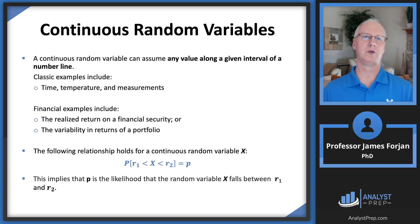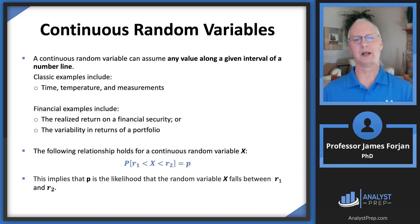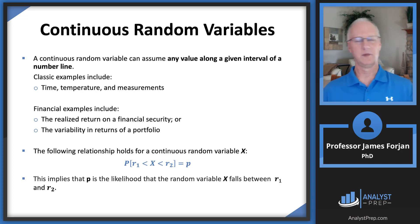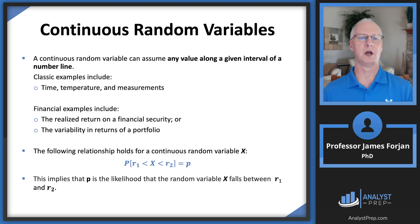A continuous random variable can take any value along an interval. Classic examples include time, temperature, and measurements like height and weight. For example, how long does it take to get from Pittsburgh, Pennsylvania to Philadelphia? The answer depends on traffic, weather, and mode of transportation — clearly walking takes longer than flying.